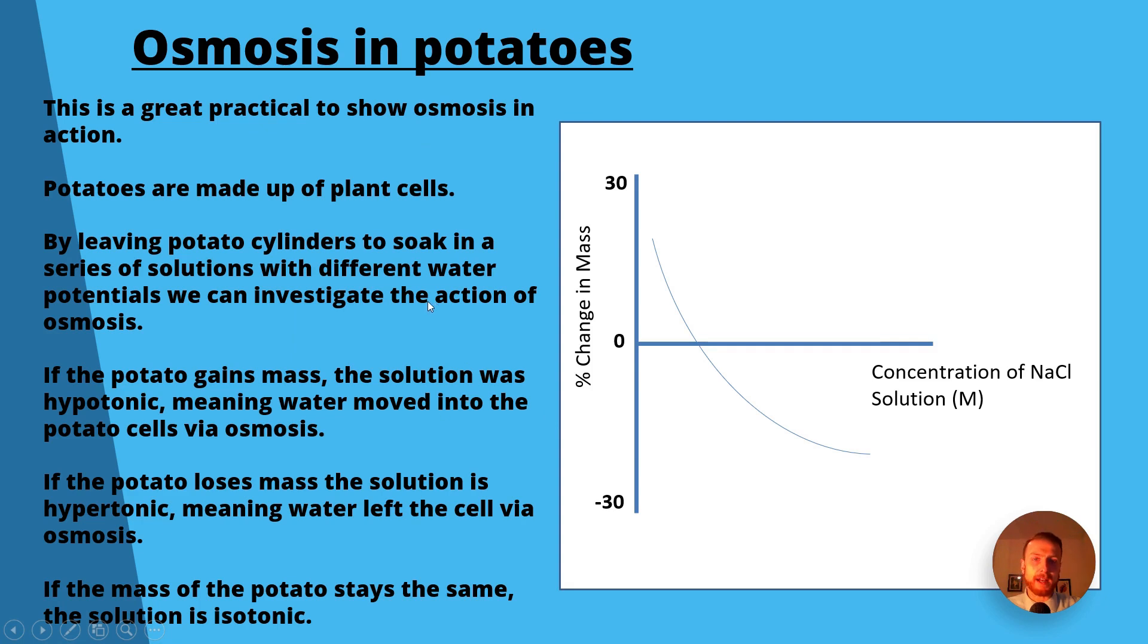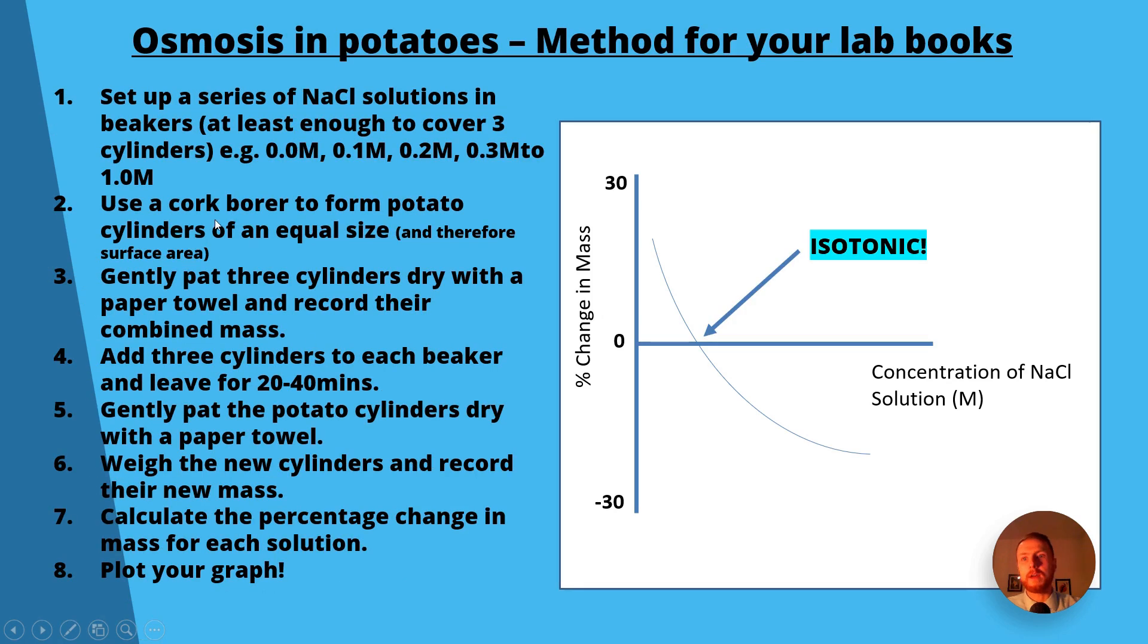The practical we looked at last time was osmosis in potatoes and we got this lovely curve which goes down. So you basically submerge potato cylinders in different solutions, so you take your serial dilution with different concentrations of either sucrose or sodium chloride, you place potato cylinders in them to soak. If the potato gains mass, the solution was hypotonic, meaning water moved into the potato cells via osmosis. If the potato loses mass, the solution is hypertonic, meaning water left the cell via osmosis. And finally, if the mass of the potato stays the same, shown by the x-axis here, so we'd have a zero percent change in mass, the solution would be isotonic.